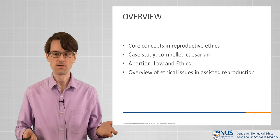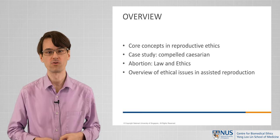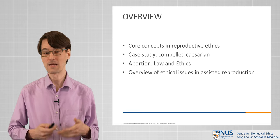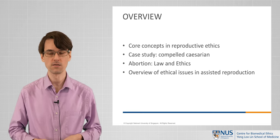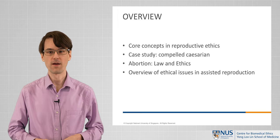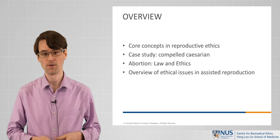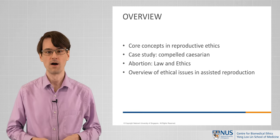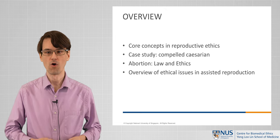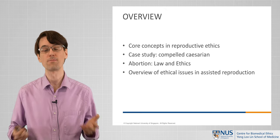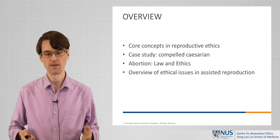Today I'll be covering some very basic core concepts in reproductive ethics that are applied to a number of different domains. We'll look at a case study on potentially compelling a caesarean section in a case of distressed pregnancy. Then we'll turn to an area of substantial social and ethical deliberation and disagreement — abortion — and think about both the law and the ethical aspects of abortion in Singapore. And finally, we'll spend some time on an overview of ethical issues in assisted reproduction, including specific points where there's been deliberation and some regulations in Singapore.